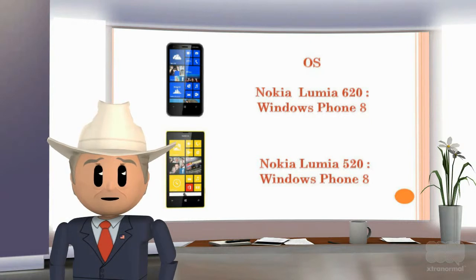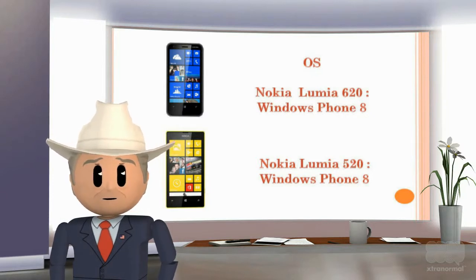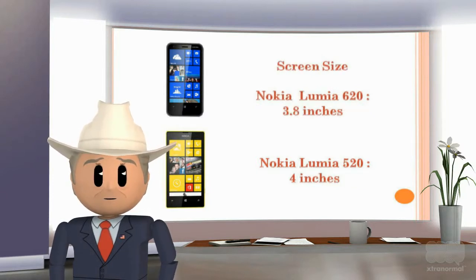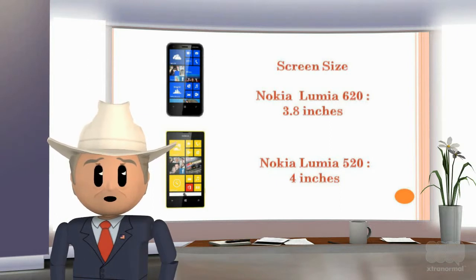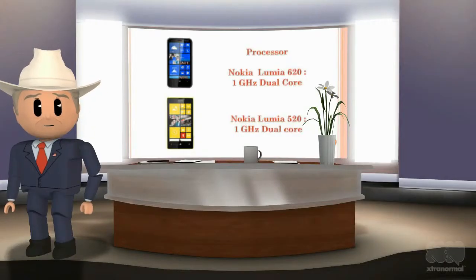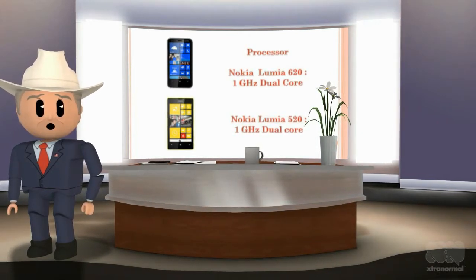The OS of Nokia Lumia 620 is Windows Phone 8, and the OS of Nokia Lumia 520 is also Windows Phone 8. Screen size of Nokia Lumia 620 is 3.8 inches and screen size of Nokia Lumia 520 is 4 inches. Both handsets run on the same processor speed of 1 GHz dual-core.